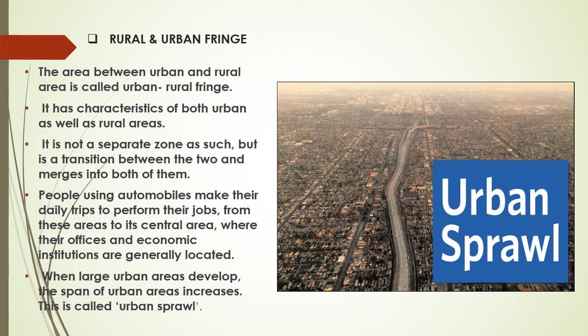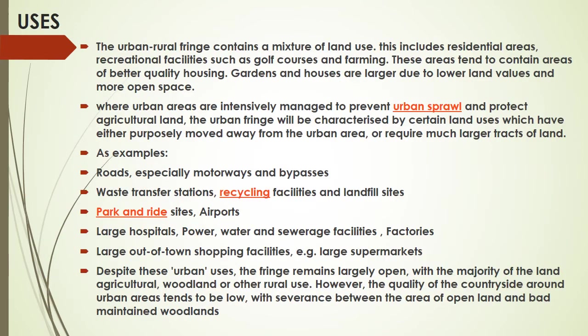People using automobiles make their daily trips to perform their jobs from these areas to the central area where offices and economic institutions are generally located. When large urban areas develop, the span of the urban area increases, and this is called urban sprawl — when the extent of the urban area increases and the area converts into urbanization.